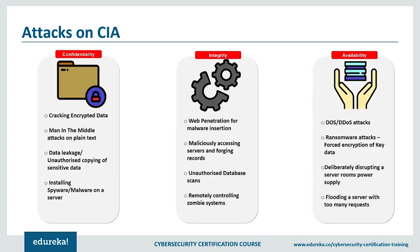First is confidentiality — roughly equivalent to privacy. Measures to ensure confidentiality prevent sensitive information from reaching the wrong people while making sure the right people can access it. Access must be restricted to those authorized to view the data. Data is often categorized by the damage it could cause if mishandled. Training for authorized personnel typically covers security risks, strong password practices, and social engineering methods to prevent accidental breaches.